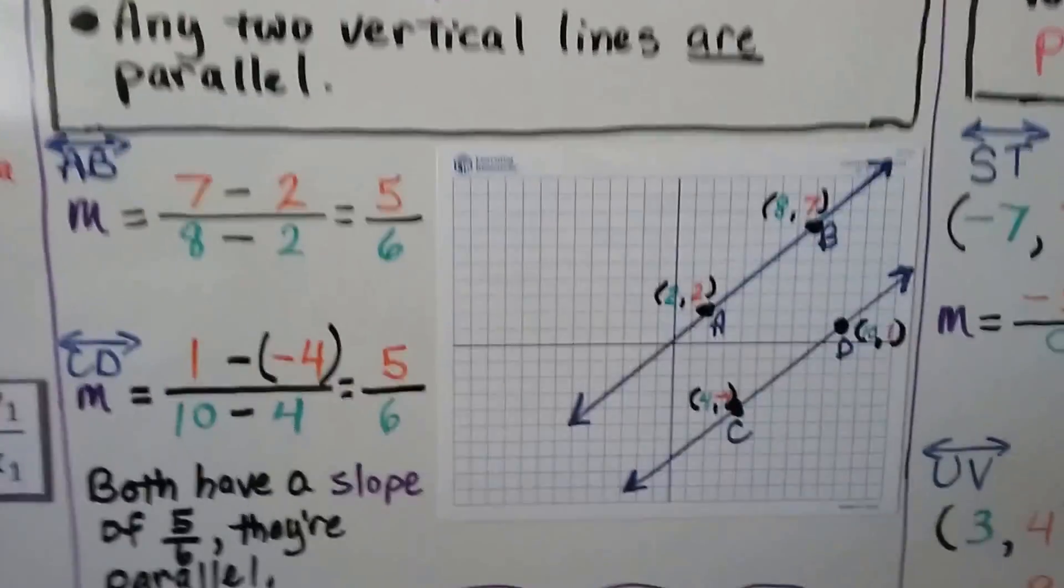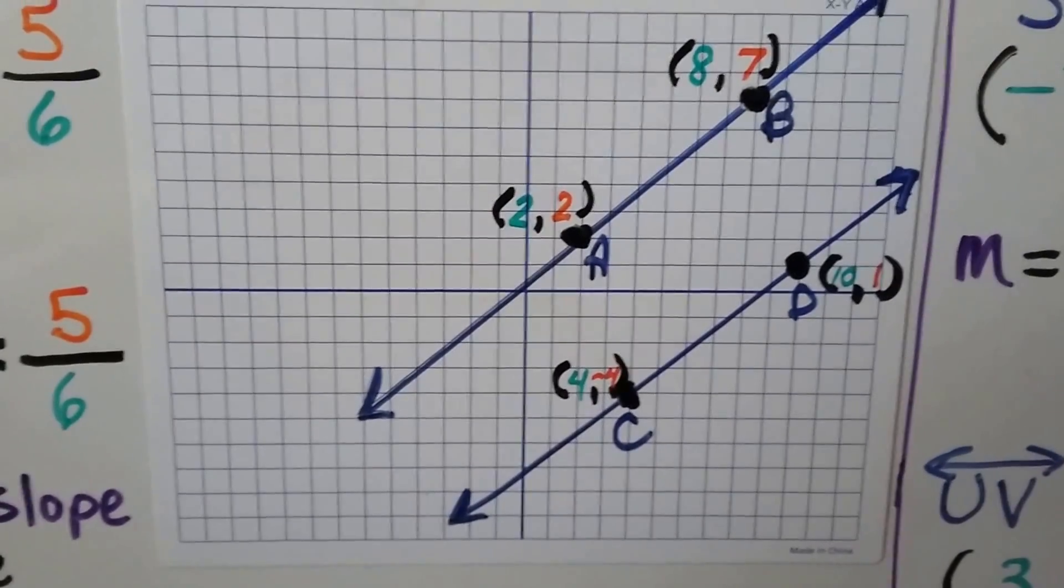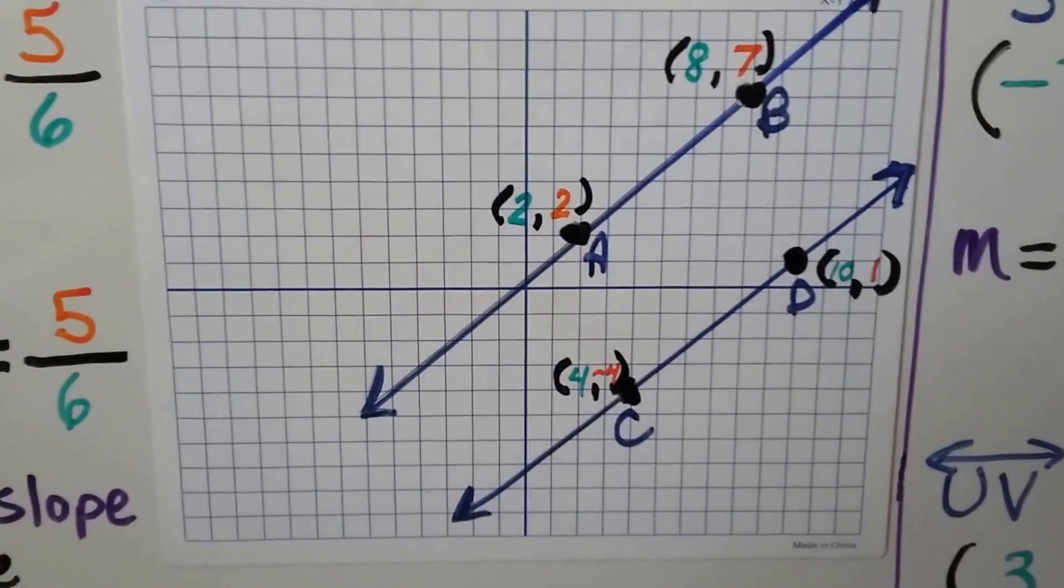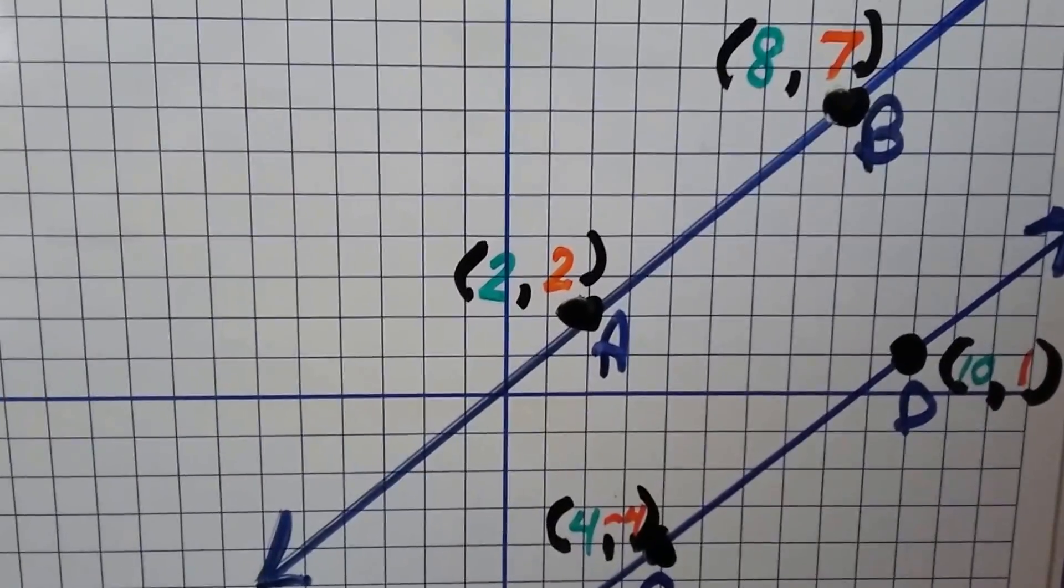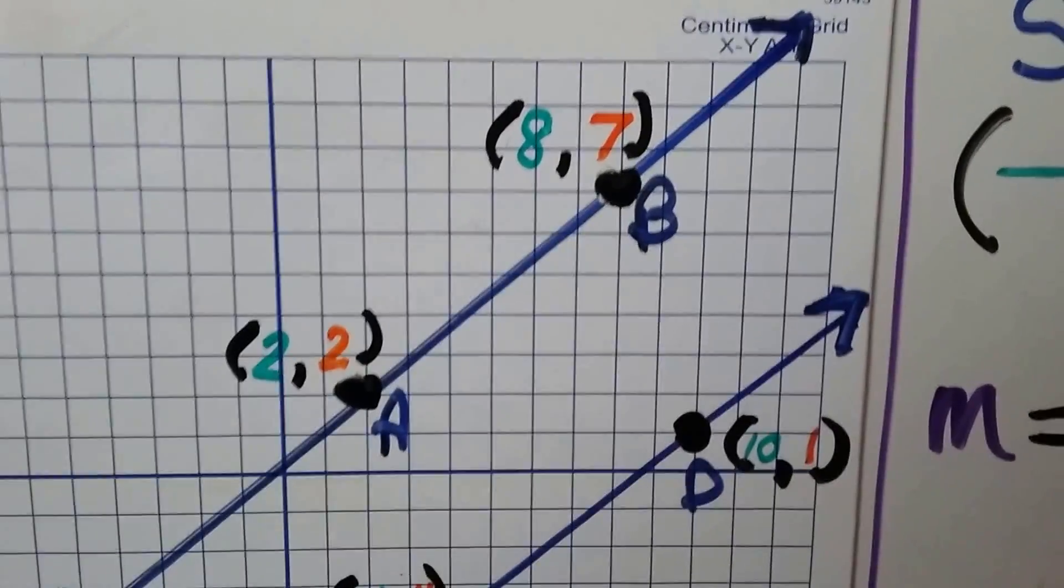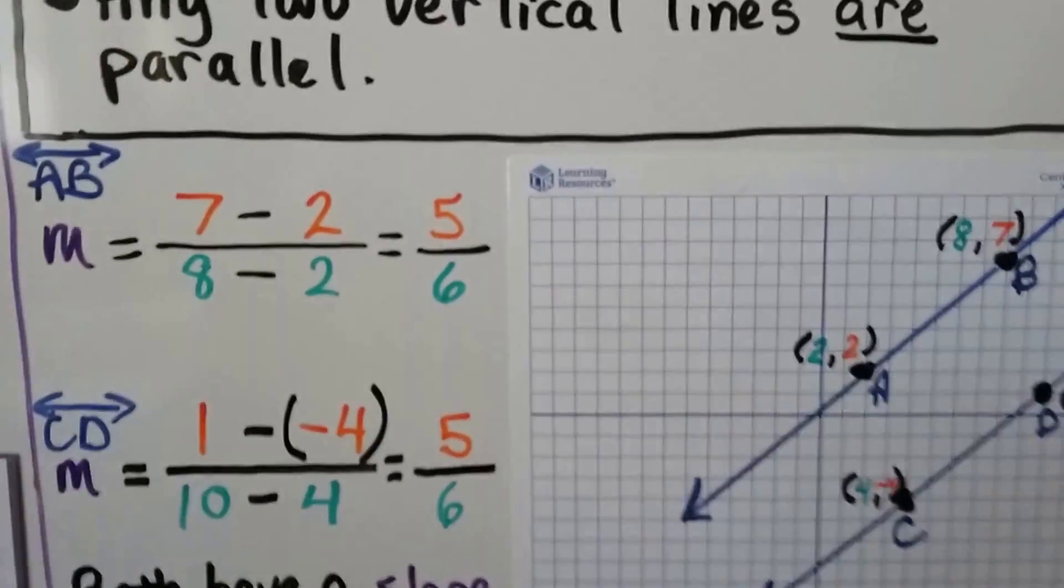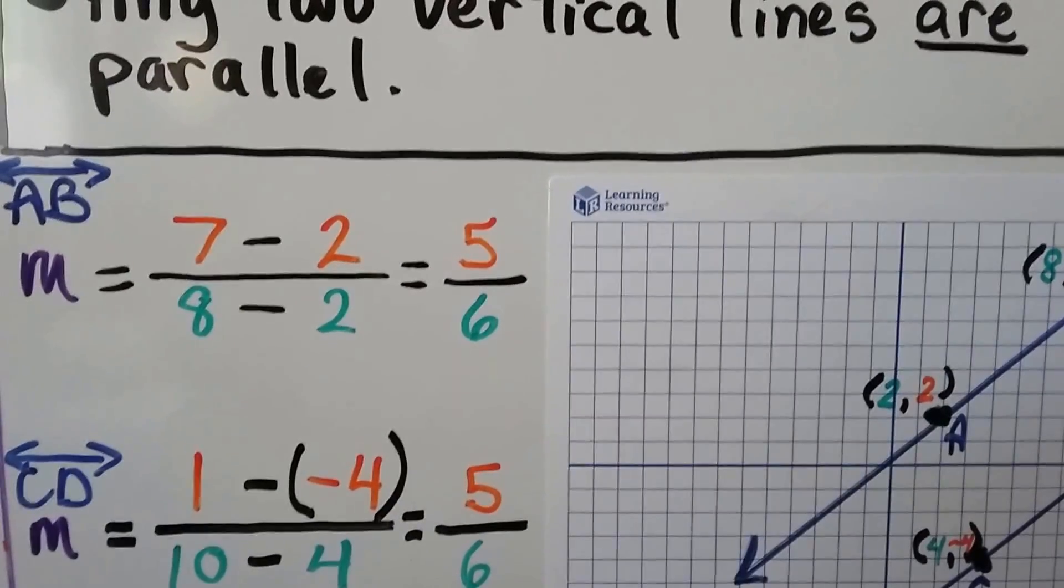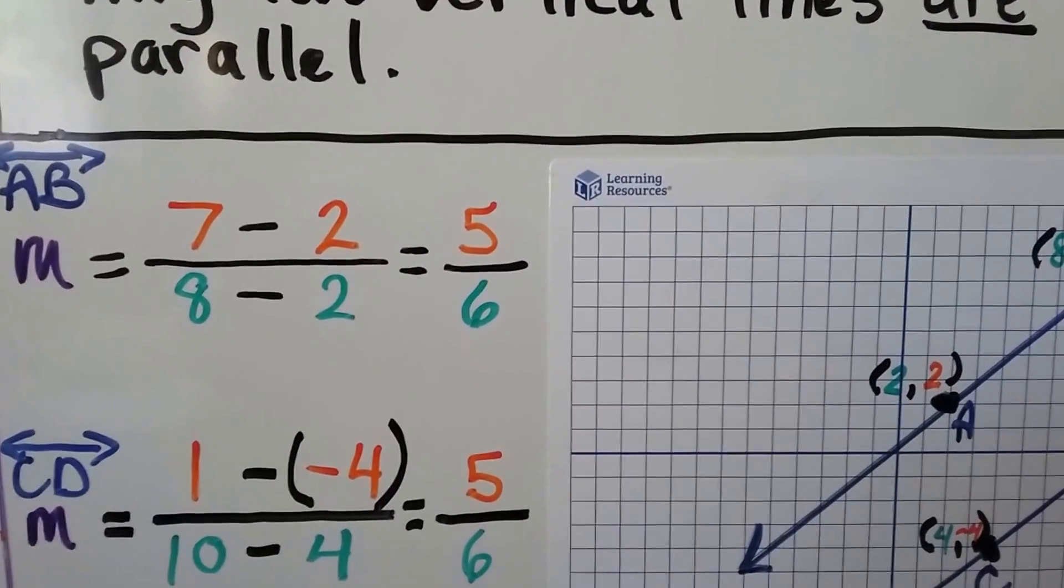Let's take a look at this graph. We've got line AB on the top and line CD on the bottom. We can see there's two points on each line and we find the coordinates of each point. Point A is at 2 for x and 2 for y. Point B is at 8 for x and 7 for y. We substitute that into the slope formula and we get 7 - 2 over 8 - 2. We do the math and we get 5/6. That's our slope for line AB.